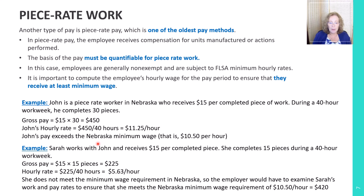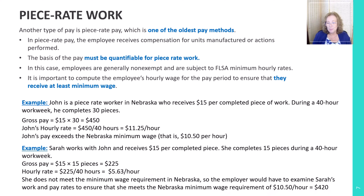Sarah, however, only made 15 pieces, so her pay is only $225. Dividing $225 by 40 hours gives an effective rate of $5.63 per hour, which is below Nebraska's minimum wage of $10.50. Therefore, the employer must pay Sarah $420, which is 40 hours times $10.50 per hour.